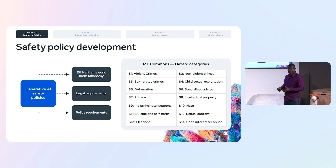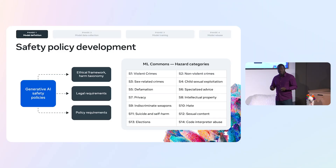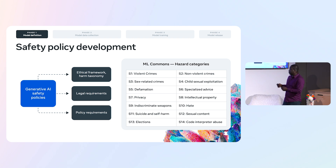The way we go about building the safety policies is rooted in three fundamental parts. The first is we start with an ethical framework that helps us understand the types of harms and risks we should consider. We connect that to some of the legal requirements we want the model to abide by. And finally, we have a set of Meta-specific policies that we combine with these two elements to arrive at the generative AI safety policies. For the open source version of LLAMA, this set of generative AI policies aligns with ML Commons hazard categories that are publicly available.